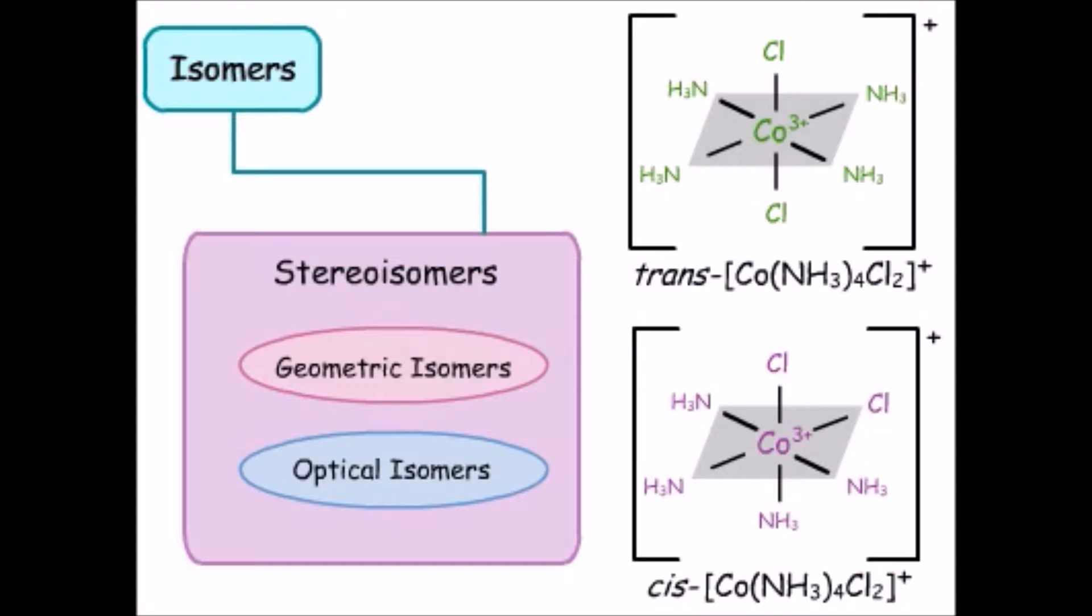It is important to remember that geometric isomers have different physical properties due to the different arrangement of atoms and therefore of electrons. We looked at three compounds.